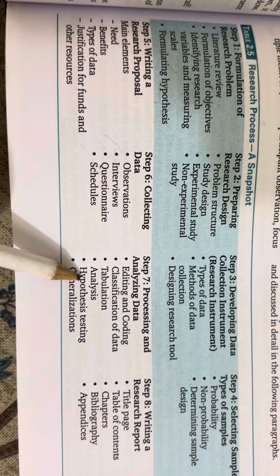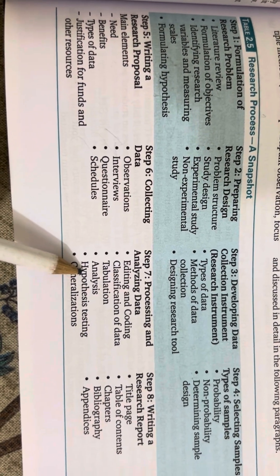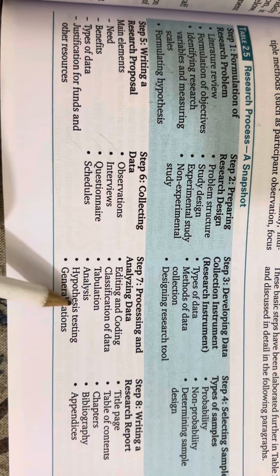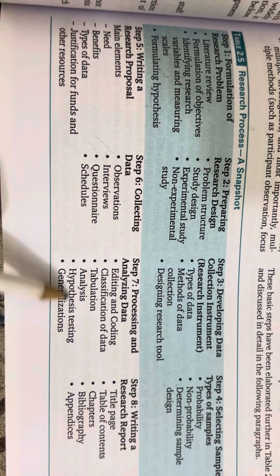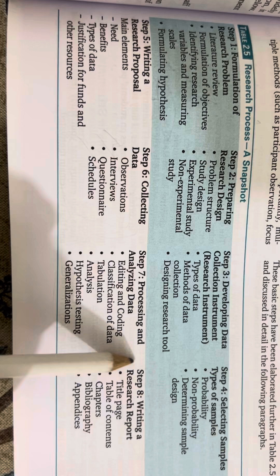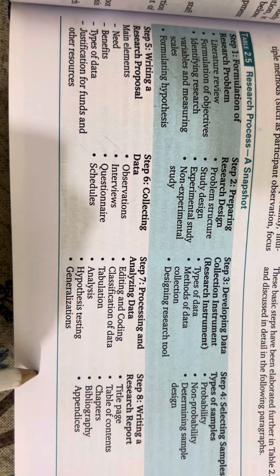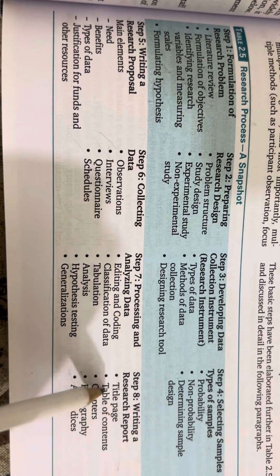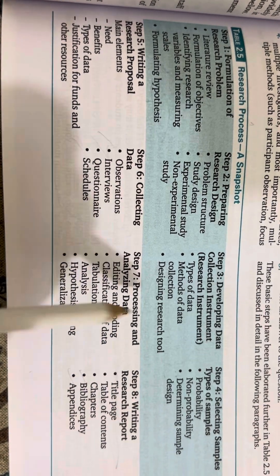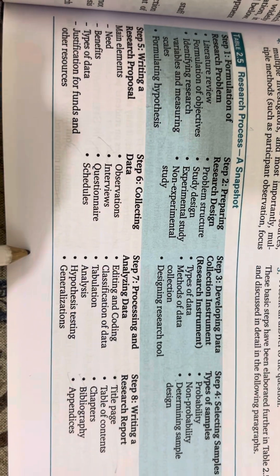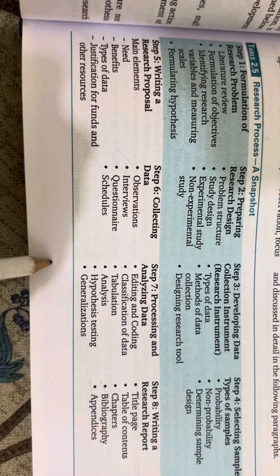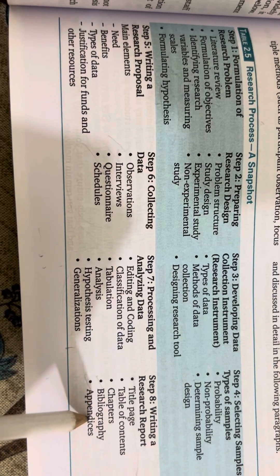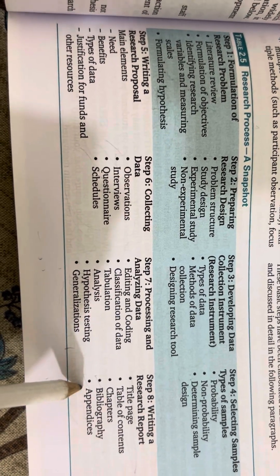Then you will set your hypothesis. You will set your topic, issue, or problem, and test whether the hypothesis is correct or not. Then you will give a general statement based on your research. Finally, you will write a research report — that is the last and final step in the research process.